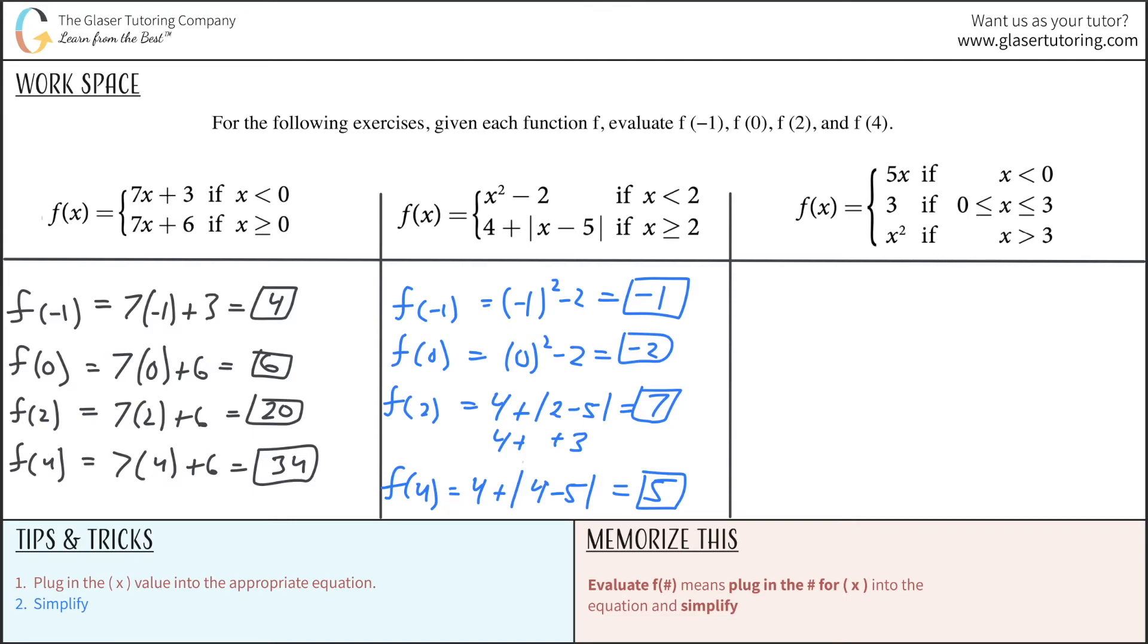Last equation. So it looks harder, but it's no harder. We deal with each piece individually depending upon the values of x we are talking about. So f of negative 1. Where does that fall under, which constraint? Well, it falls under the first constraint. Negative 1 is less than 0, so I'm going to use this equation. So 5 times negative 1, simply negative 5.